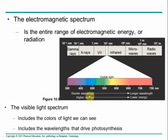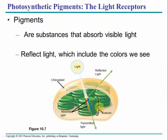Shorter wavelengths have higher energy — think of more peaks in a period of time, and therefore more energy. And the visible spectrum is what we see, including that which drives photosynthesis.